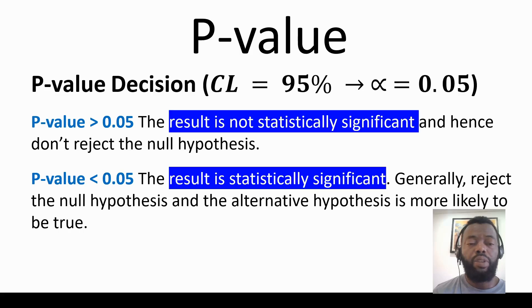When p-value is less than 0.05, the result is statistically significant. Generally, we reject the null hypothesis and the alternative hypothesis is more likely to be true.